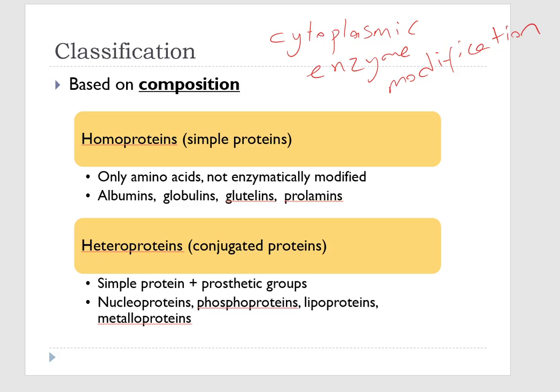After synthesis in ribosomes, cytoplasmic enzymes modify some amino acid constituents, and this changes the elemental composition of some proteins. Proteins that are not enzymatically modified in cells are called homoproteins — they are simple proteins. Those that are modified or complexed with non-protein components are called conjugated proteins or heteroproteins. These non-protein components are often referred to as prosthetic groups.